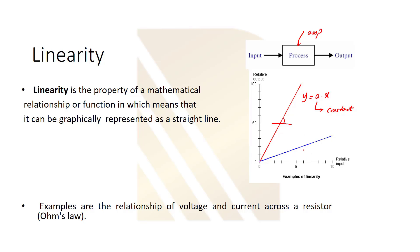For example, we can show another line — the blue one — where the slope is lower. For this one, we can say y equals b times x. This is also linear. We always expect to have this kind of output in our systems — in our amplifiers or mixers. But in the real world, it's challenging to have a perfectly linear system. No matter how much we try, we always have some non-linearity.